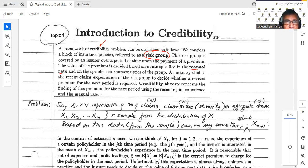What is the important thing here? We are looking at recent claim experience. Credibility theory concerns finding the premium for the next period using the recent claim experience and the manual rate. We're going to combine the recent claim experience and the rate we've been using from the rate book, the manual rate.